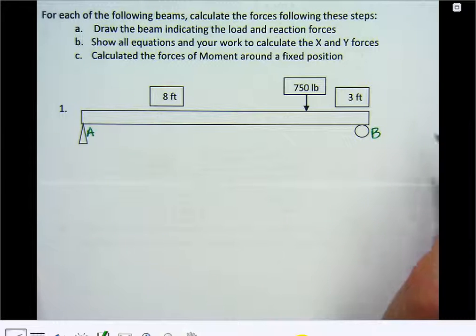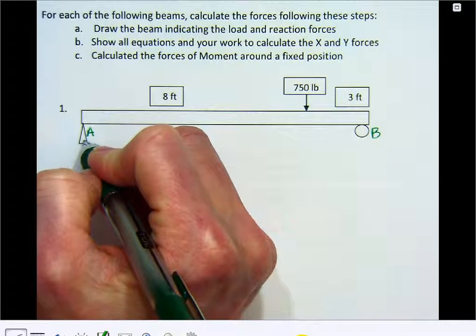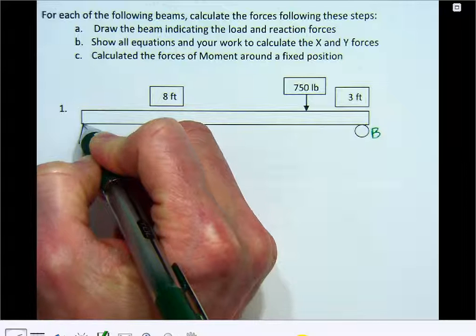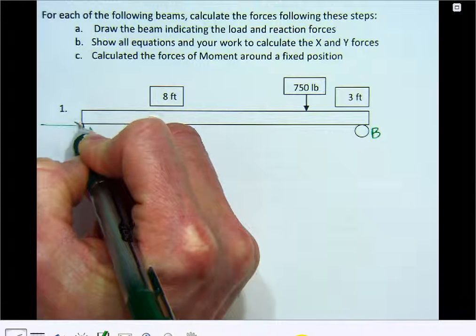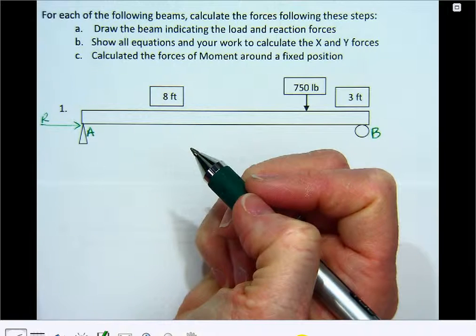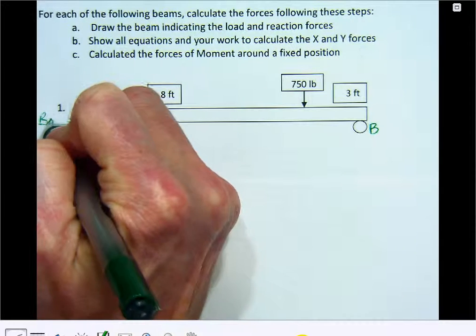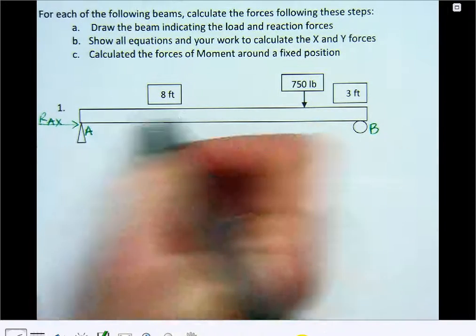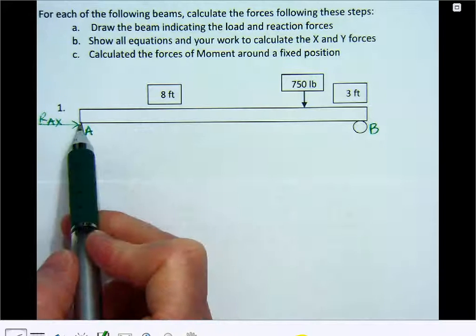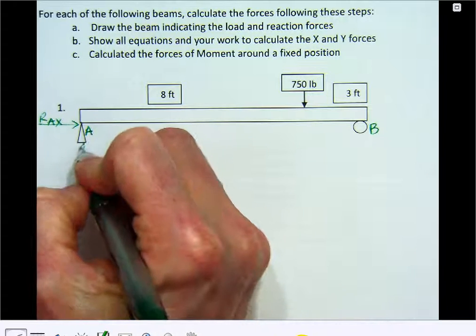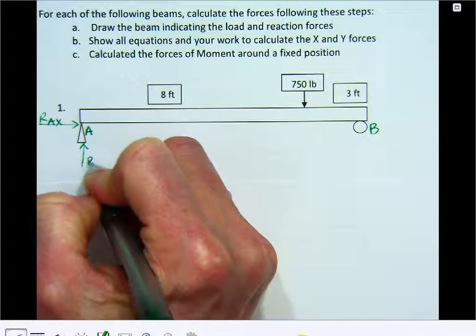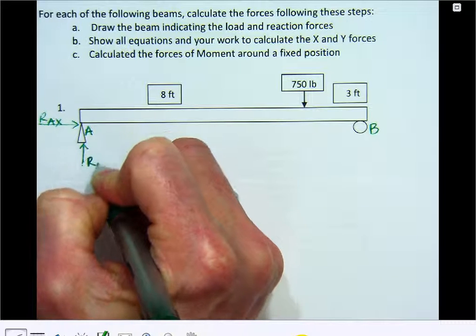So the thing that you need to understand is there's different reactions at each different type of pin. For my pinned connection here, that means my bridge is not allowed to move back, so there must be a reaction force in this direction. So I'm going to write an R for reaction force at A in the x direction, because it's going to push back when the bridge tries to push on it. Also at this pinned connection, there is going to be a reaction force in the y direction at A.